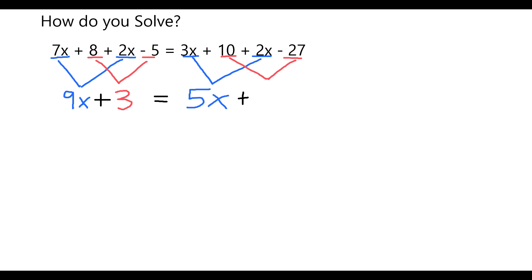On the right side, 3x plus 2x gives me 5x, and 10 minus 27 is going to be minus 17. So this is going to be 5x plus negative 17, or equivalently 5x minus 17.